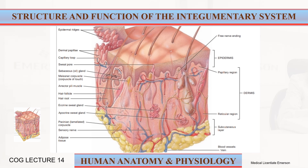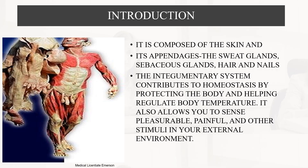Welcome to this lecture on the structure and function of the integumentary system, part of a human anatomy and physiology series. The human skin is composed of the skin itself and its appendages, which include sweat glands, sebaceous glands, hair, and nails. The integumentary system contributes to homeostasis through protection of the body, helping regulate body temperature, and allowing you to sense pleasurable, painful, and other stimuli in the external environment.